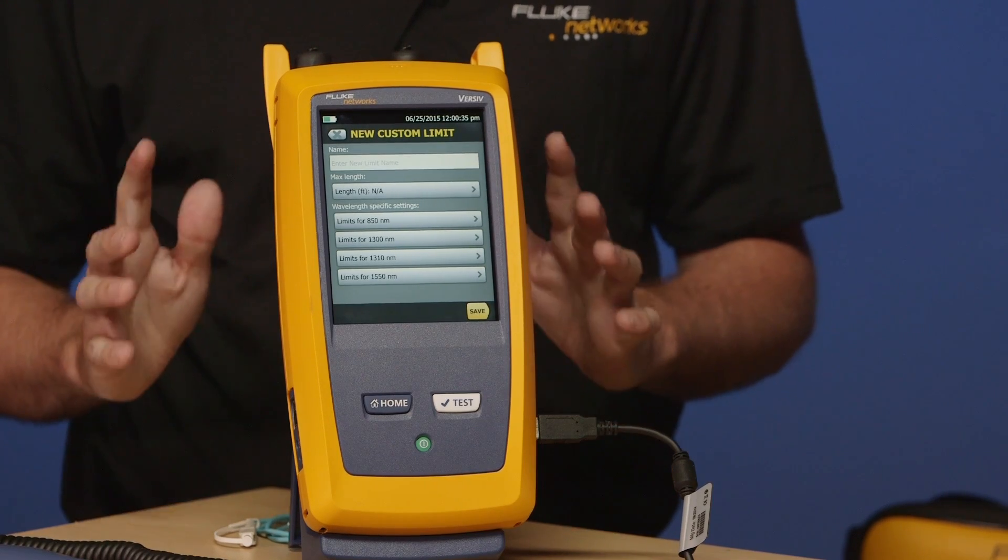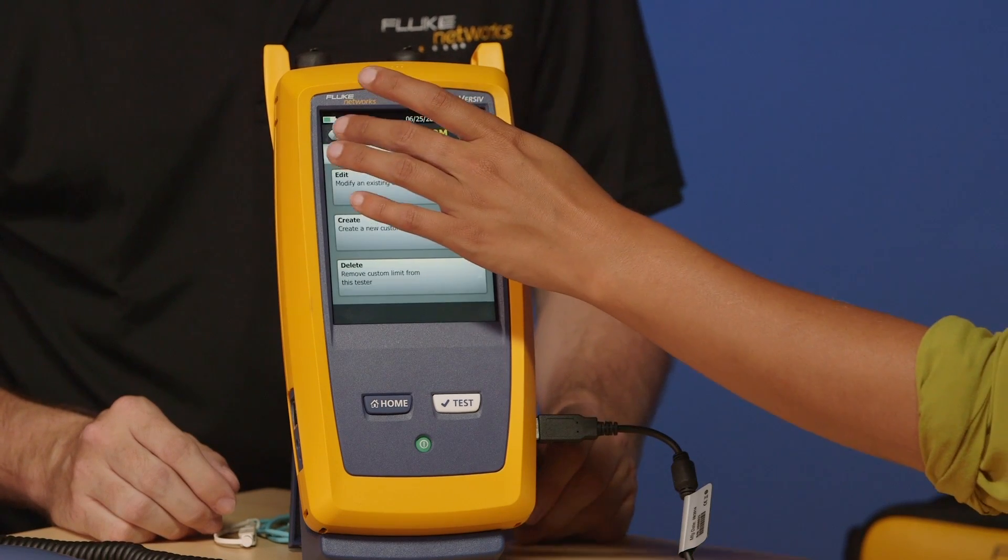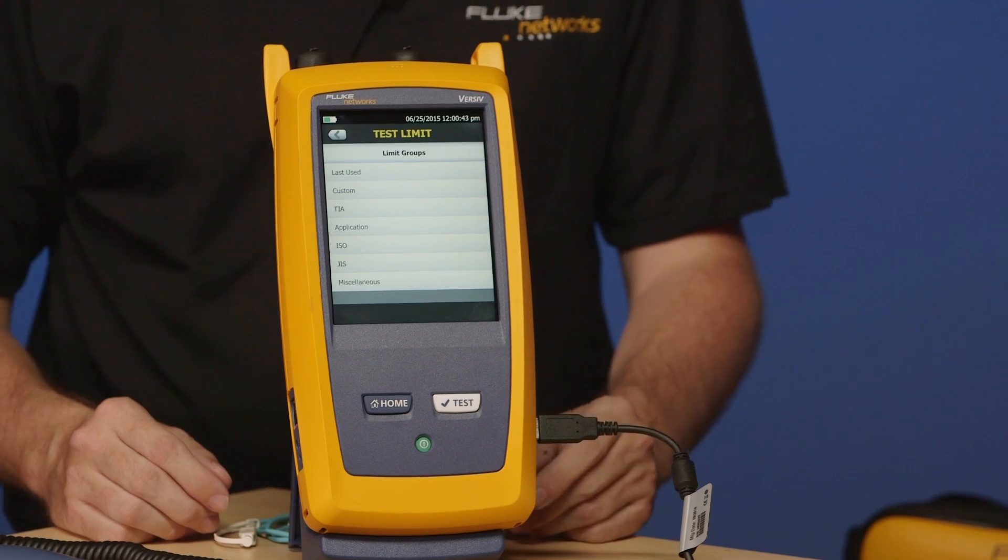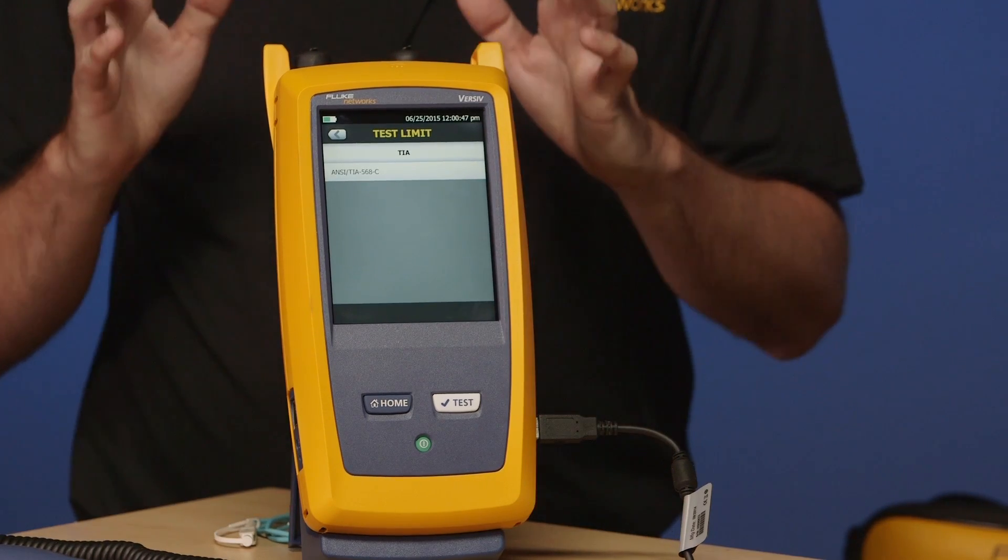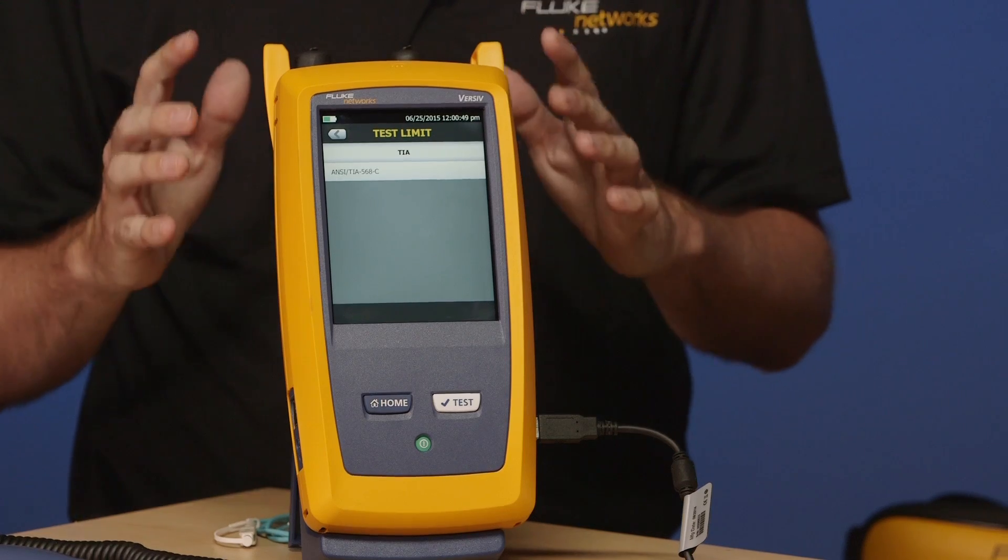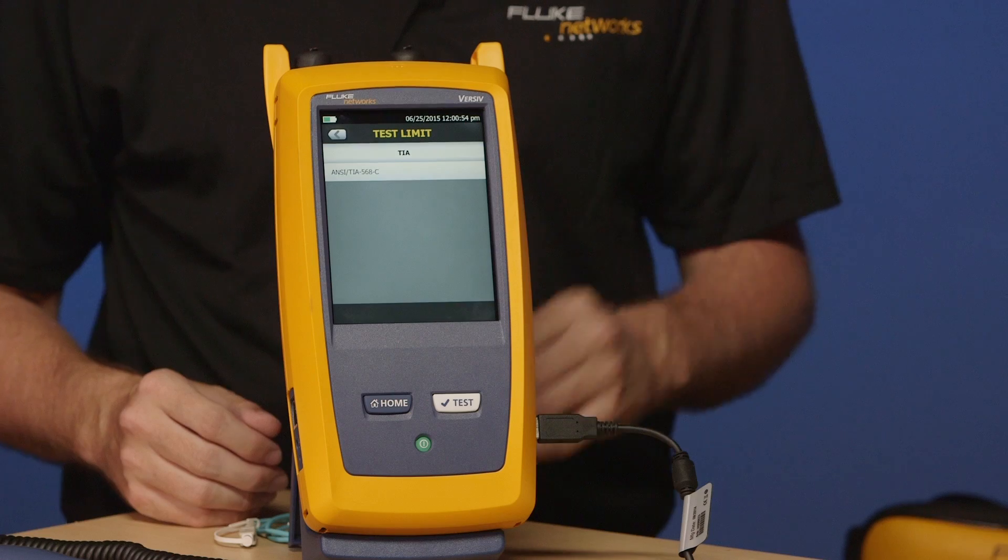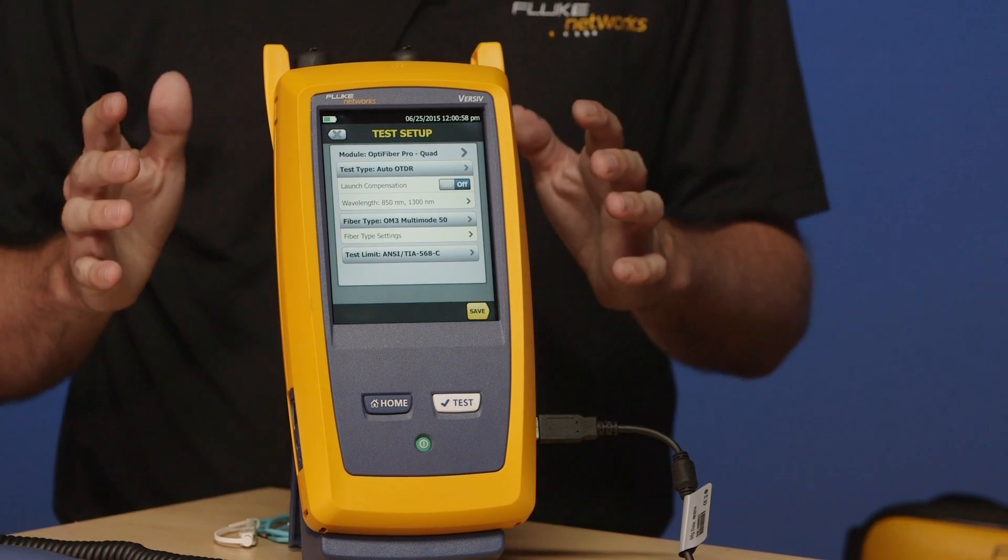We're going to use a basic test today. So, if you'd like to come out of that menu for me. Okay. There we go. And we'll go down to TIA. And we'll select 568. Now, because we selected the fiber type as multimode, our test limits here that we're going to be presented with will be multimode only. So, go ahead and tap that for me. Excellent. And fundamentally, we've just set up the tester now.